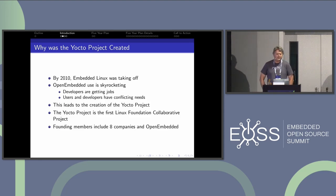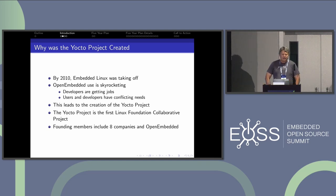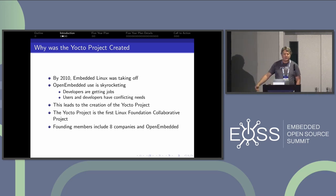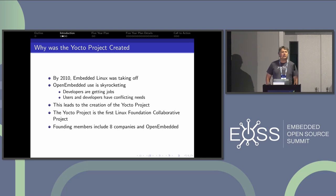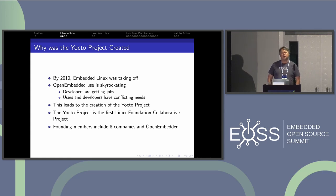So why did the Yocto project come about? In 2010, embedded Linux was really taking off. OpenEmbedded existed to build embedded Linux distributions at the time. Use was skyrocketing, and a lot of the people that did the early work on it were graduating from school. It was basically very much a hobby project at the time for people who just wanted to run Linux on random devices.